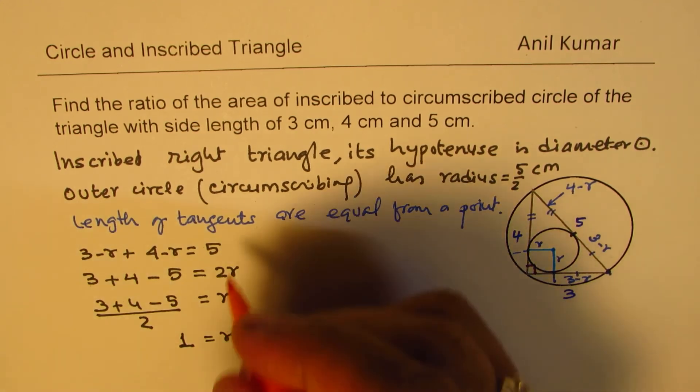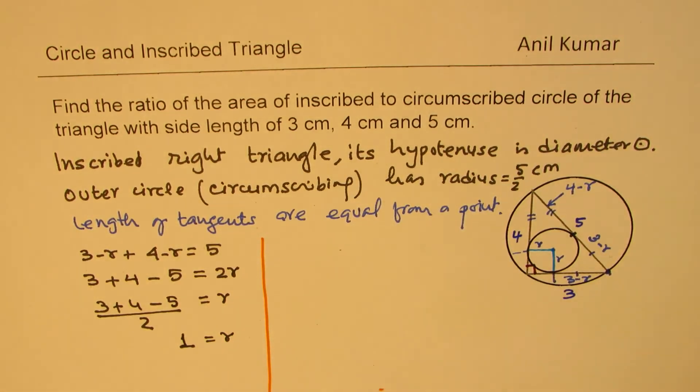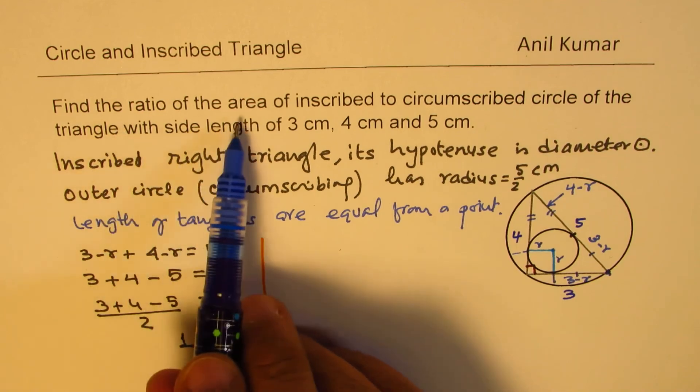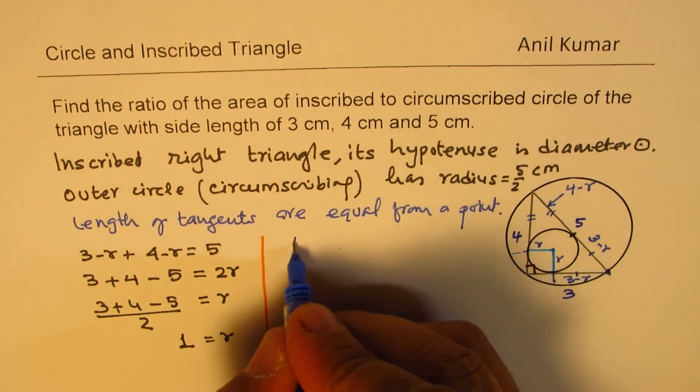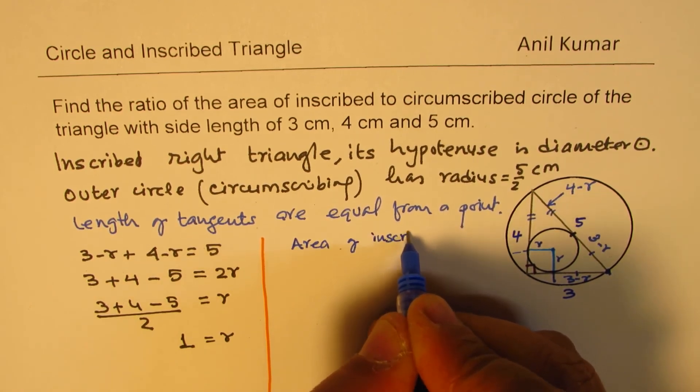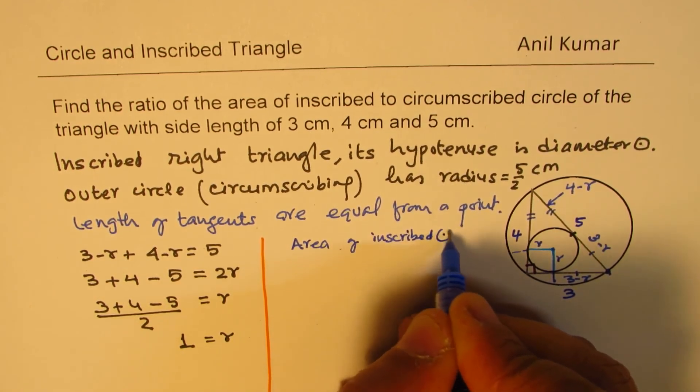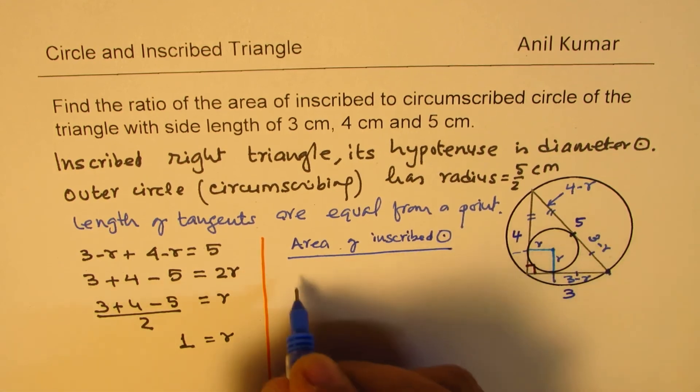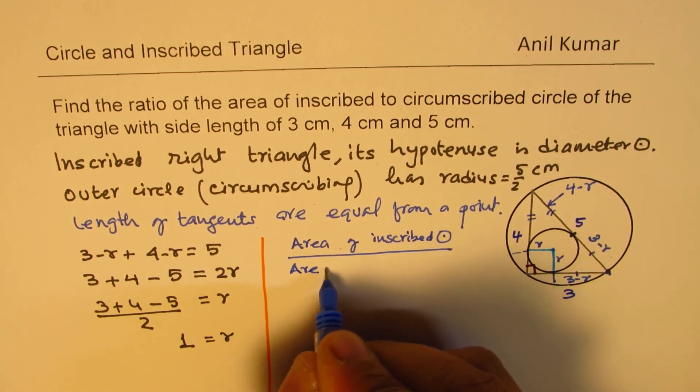Now we know the radius of both the circles. So we can now find the ratio of the areas. We need to find ratio of area of inscribed circle over area of circumscribed circle.